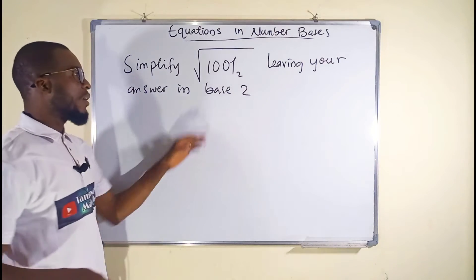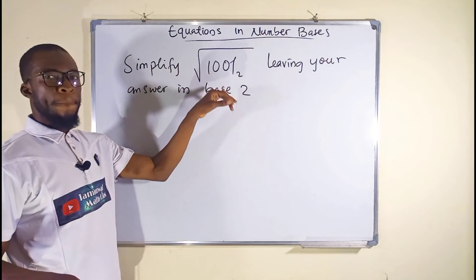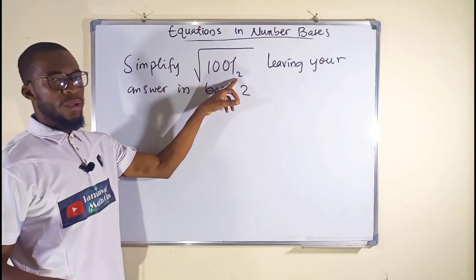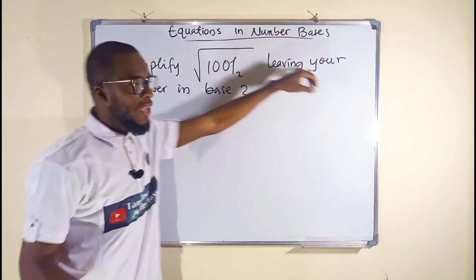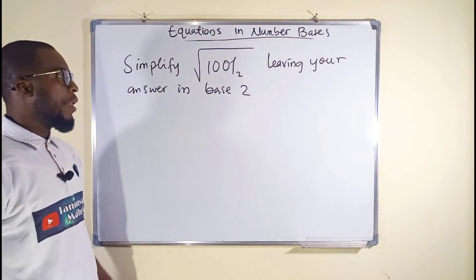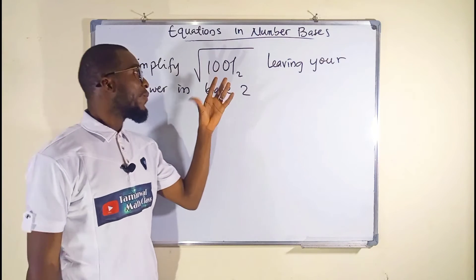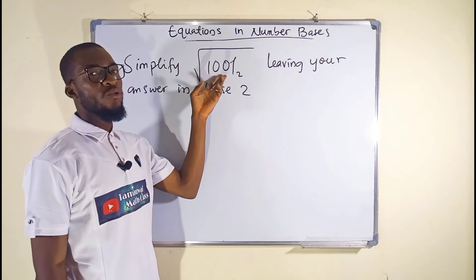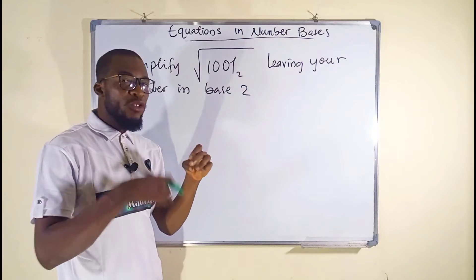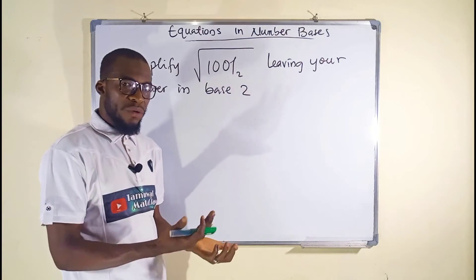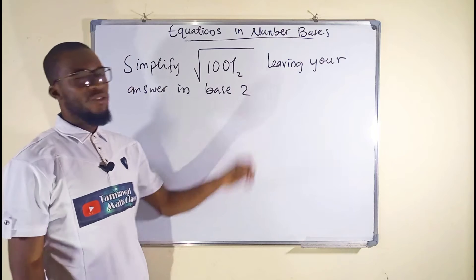So here is our last question. We are asked to simplify the square root of a number in base 2 and we want to leave the answer in base 2. We know it is very difficult for us to take the square root of a number in base 2, but we are free to convert that number into base 10, take the square root, and reconvert it back into base 2.